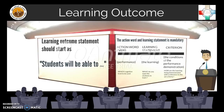As you can see in the tabular format, the action word or action verb reflects the performance. You can ask yourself which cognitive level to be used — this can be low order thinking or high order thinking to be performed by the student. Bloom's taxonomy can guide you in this.